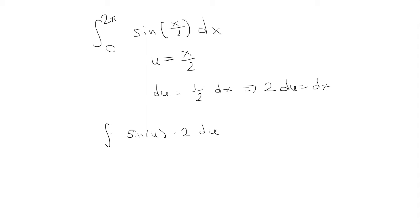And I'm going to choose to change the limits in terms of u. Now, these limits here originally were in terms of x. So if I let x equal 0, u will be 0 over 2, which is 0. If I let x equal 2π, u then will be 2π over 2, which is π.